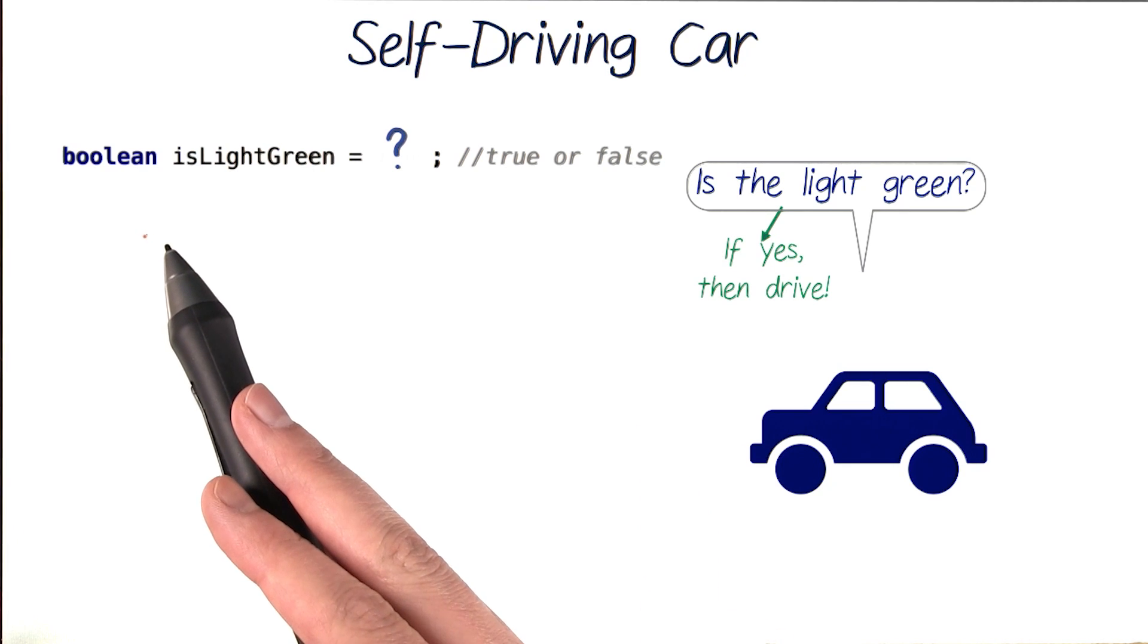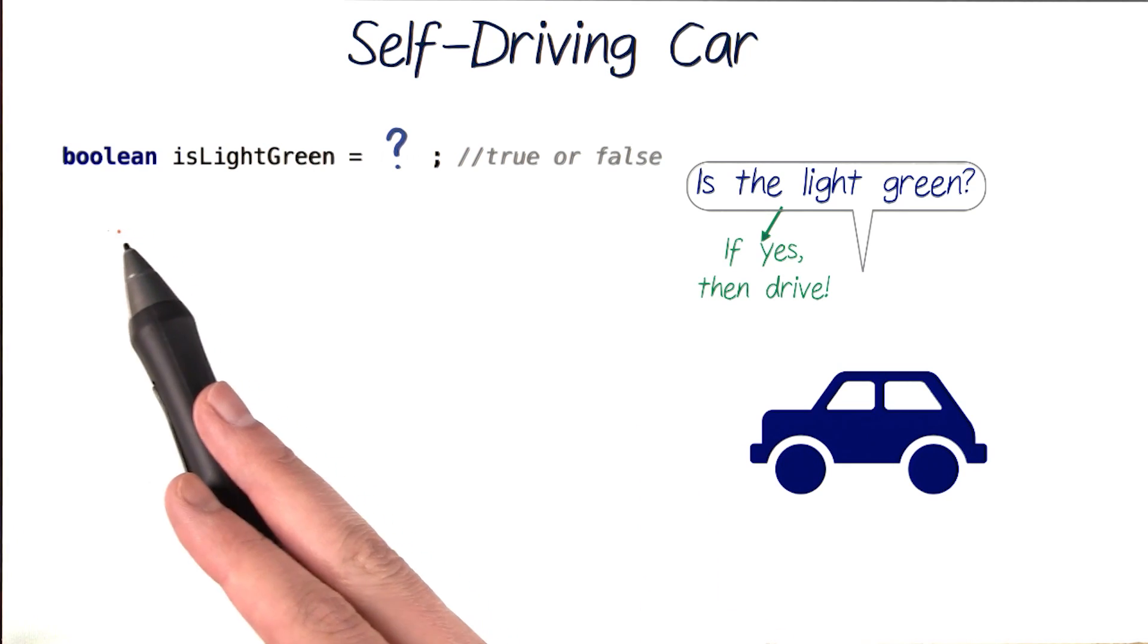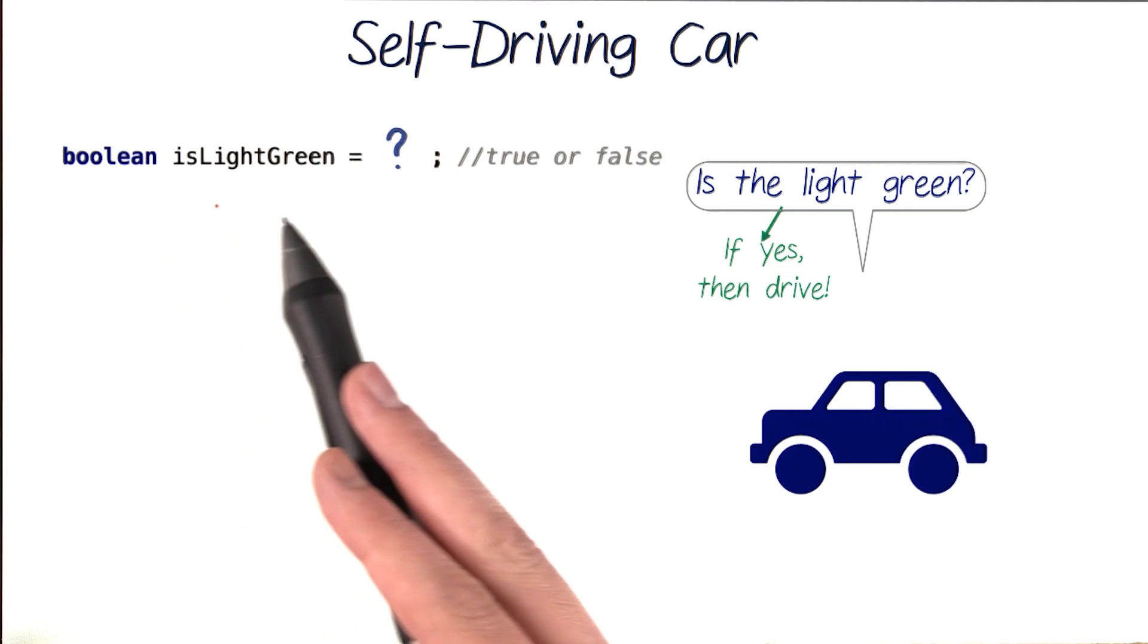We first need to know if the light is green, and we can store this information as a Boolean variable which I'll call isLightGreen.